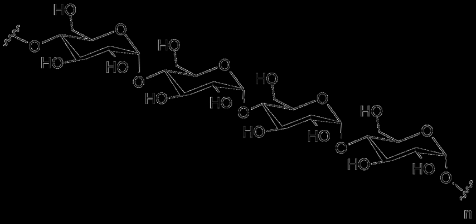Glycogen is analogous to starch, a glucose polymer in plants, and is sometimes referred to as animal starch, having a similar structure to amylopectin but more extensively branched and compact than starch.